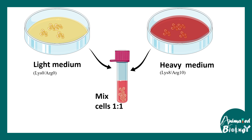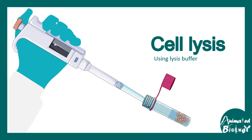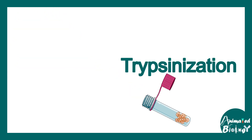On the other side, we have to grow an equal number of cells using lysine 8 or arginine 10 — this kind of heavy media. Later on, we have to mix the cells in a one-to-one proportion; roughly about a million cells are required.